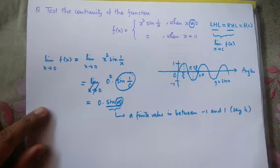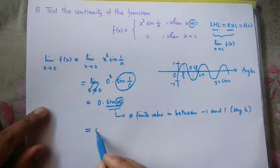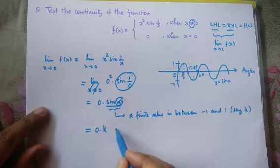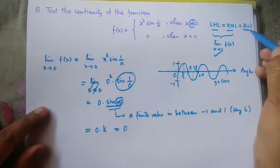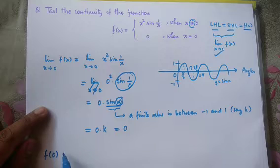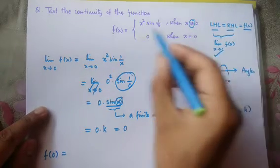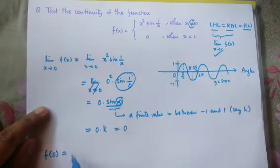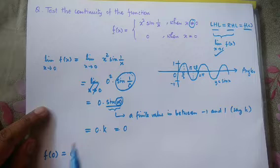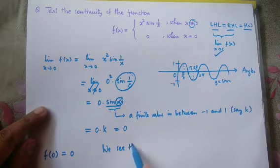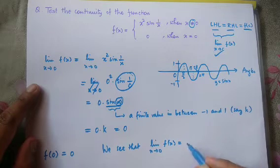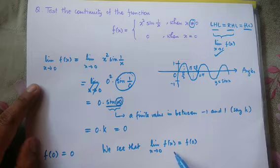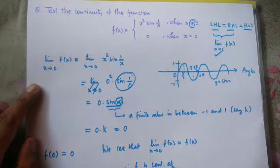That's why the value of sin(infinity) is also a finite value — in between minus 1 and 1. So this can be written as 0 times k, where k is some finite value. And 0 times k equals to 0. So I have found the value of the limit. Now let me check what is f(c), that is f(0). When x is 0, the function value is 0. So f(0) equals 0.